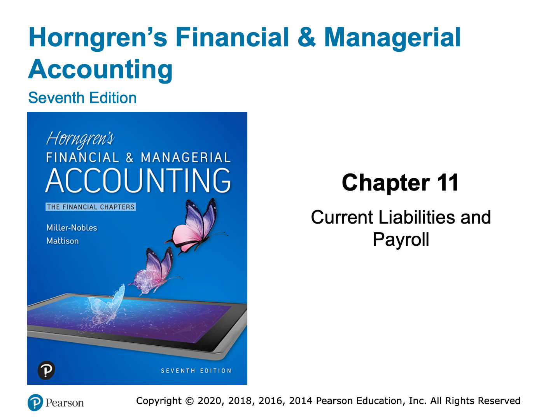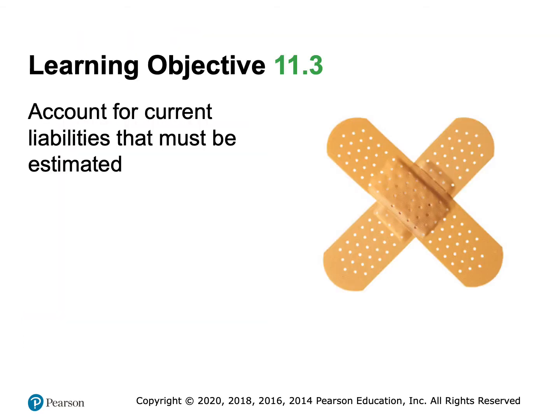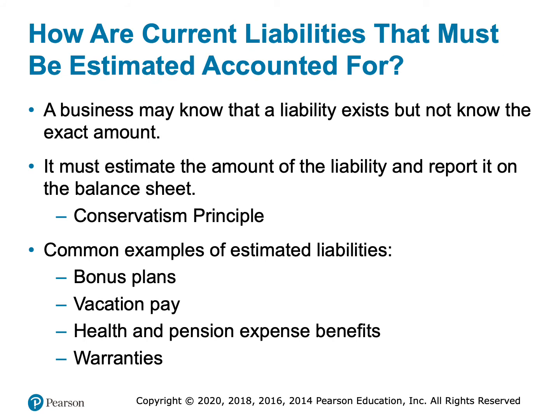The last two objectives cover some unique situations. What about when we have a liability that we know we're going to have — there's been a past event, we know we're going to have a future obligation, we know it's unavoidable — but we don't know the exact amount? We're going to have to estimate that liability. The conservatism principle says we never want to understate a liability, so we need to go ahead and record the estimate even if it's not exactly correct.